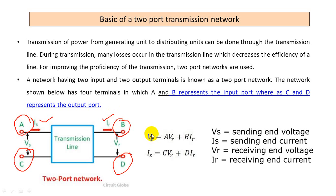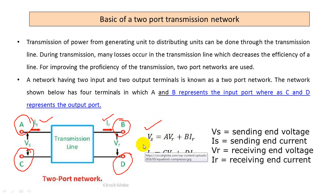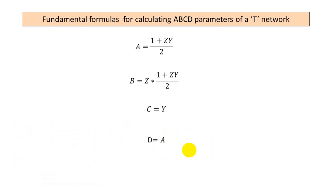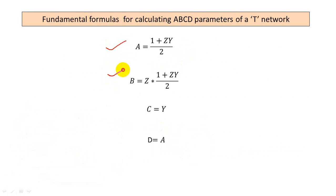The basic equation is very important: VS = A·VR + B·IR, giving the sending end voltage in relation with the receiving end voltage and current. Similarly, IS = C·VR + D·IR gives the sending end current. This is how VS and IS can be calculated. These formulas are derived and can be taken from your transmission and distribution network theory. These four parameters are completely different for a PI network and a T network.